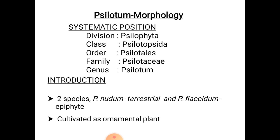Psilotum is one of the primitive pteridophytes included in the order Psilotales. It is represented by only two species, namely Psilotum nudum and Psilotum flaccidum. Psilotum is commonly called Whisk fern. Psilotum nudum is an erect plant which occurs in tropical and subtropical regions of the world. It grows in the crevices of rocks and on soils. Psilotum flaccidum is a pendulous epiphyte growing on trees. Psilotum plants are grown as ornamental plants.